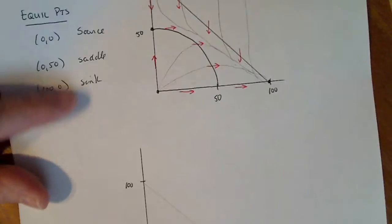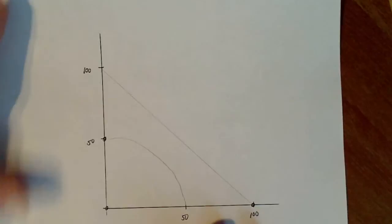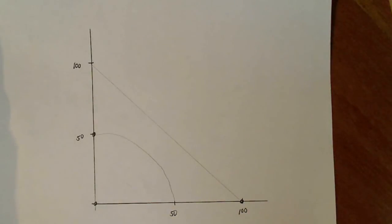this should be a source. This is a saddle and that's a sink. You need to make sure that your phase plane mimics that, shows that that's true.